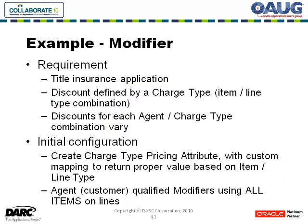That covers the price list side. The next example is with modifiers — same company. In this business, the title insurance company sold their policies through both direct and indirect agents, and this application was for their indirect business. An agent would sell one of this company's policies, keep a portion of the gross premium, and the balance would be due to the title insurance company. The list price was the gross premium, and we had to apply a discount to get the amount actually owed. The discount structure varied by region, and the most complex region had this notion of charge type, which was determined by the type of policy being sold and the rate type — the line type — being used.